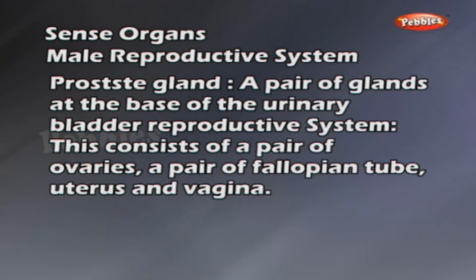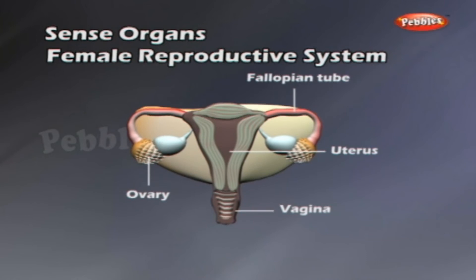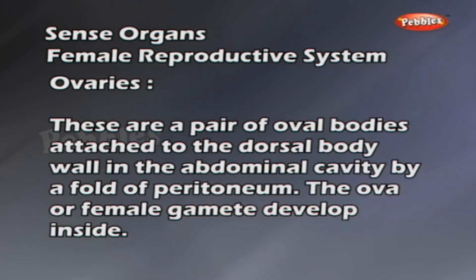Female Reproductive System. This consists of a pair of ovaries, a pair of fallopian tubes, uterus, and vagina. The ovaries are a pair of oval bodies attached to the dorsal body wall in the abdominal cavity by a fold of peritoneum. The ova, or female gametes, develop inside.